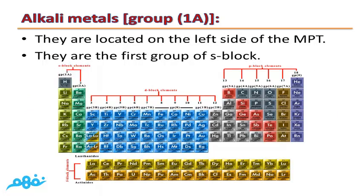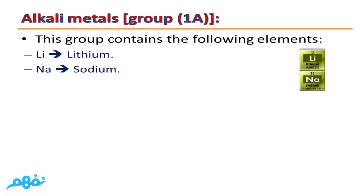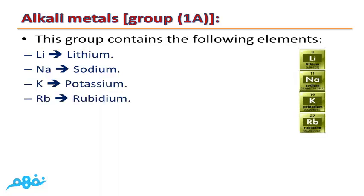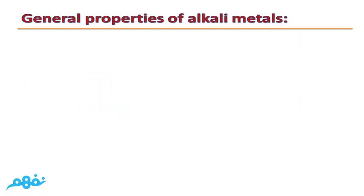Alkali metals are located on the left side of the modern periodic table, and they are the first group of the S block. This group contains the following elements: Li (lithium), Na (sodium), K (potassium), Rb (rubidium), Cs (cesium), and Fr (francium). We won't talk about francium because it is a radioactive or unstable element.